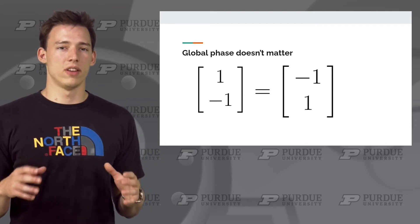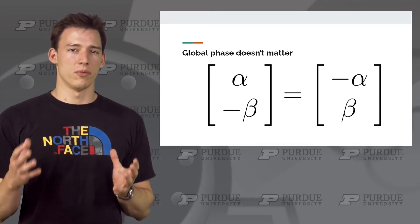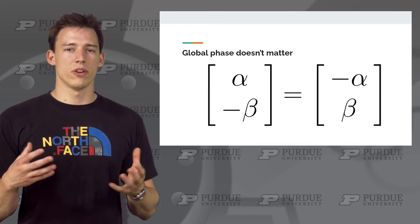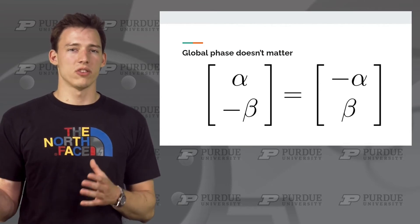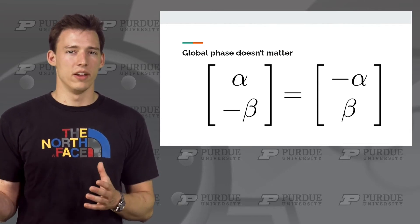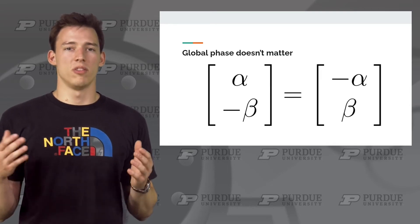For this reason, we can say that a global phase factor doesn't matter. Because of this, when discussing phase in a quantum system, it is customary to reserve the negative sign for the amplitude in the one state. Both of these states are exactly the same, they differ only by a global phase, so we just always make a habit of leaving the negative on beta in order to simplify notation.